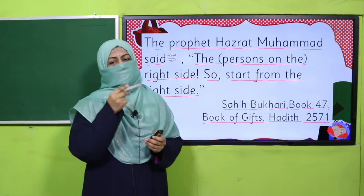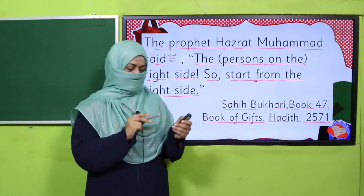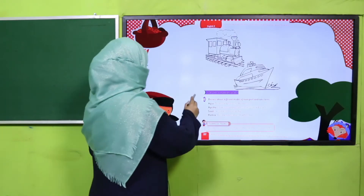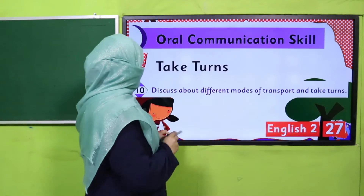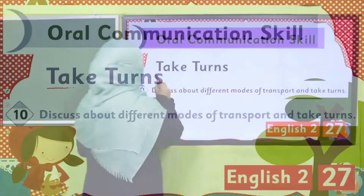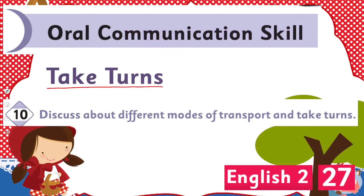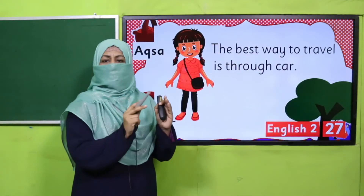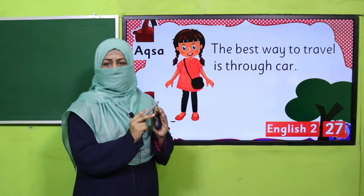Here is an activity in your book. This activity is about how to take turns. The topic is to discuss different modes of transport and take turns. How do we do it? One person puts a question and then takes an answer from everyone in a sequence.